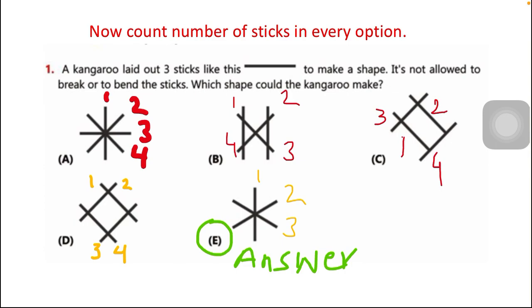Option B: two lines are parallel, so it makes one, two, and two other lines are crossing. Together they are having four sticks, so this option is also not correct. What about option C? Two sticks are parallel moving to the left side and two sticks are parallel moving to the right side. All together they are using four sticks.